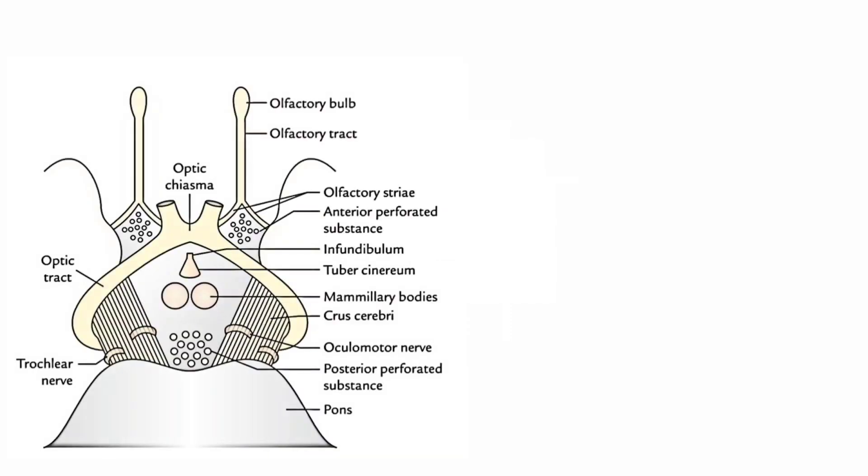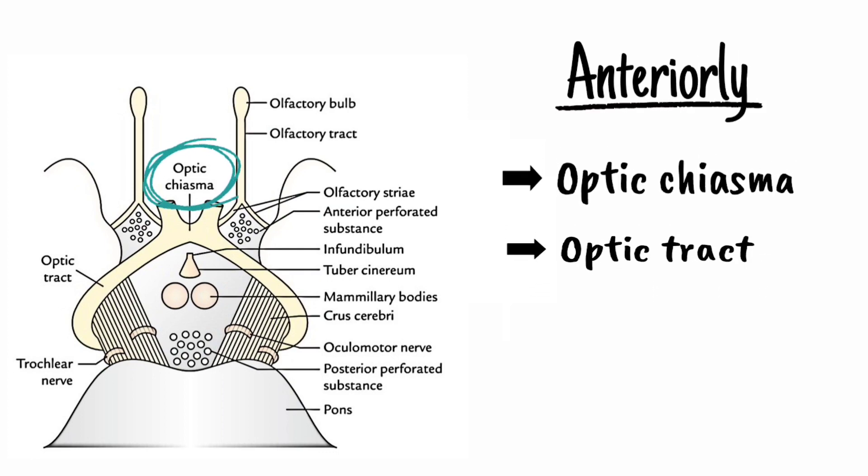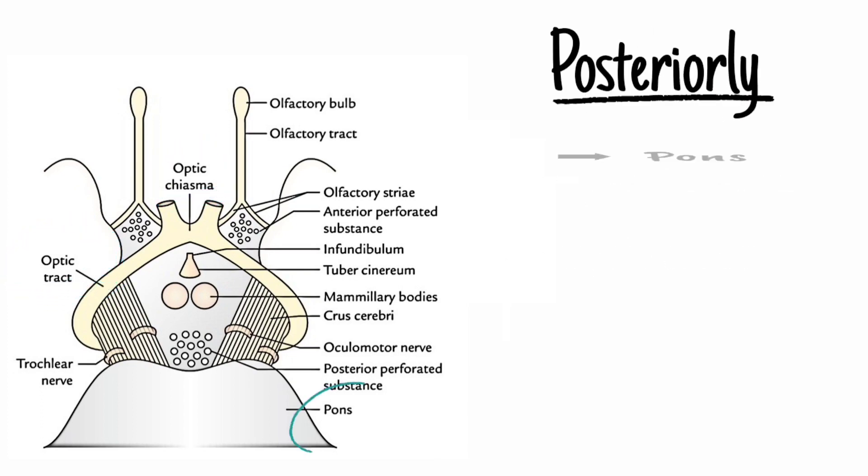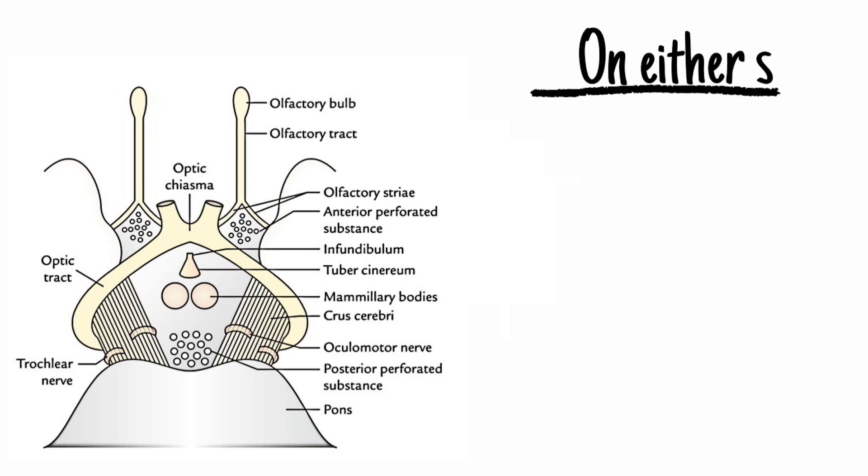Interpeduncular Fossa is a rhomboidal space, so there are 4 boundaries. Anteriorly, optic chiasm and optic tract. Posteriorly, pons. And on either side, it is bounded by crus cerebri of cerebral peduncles.